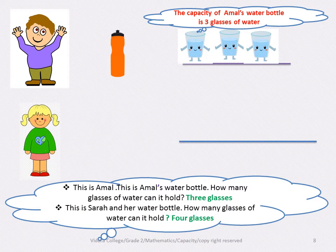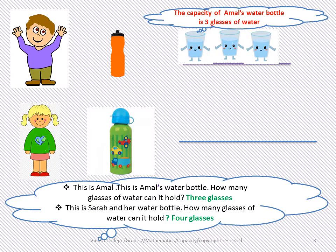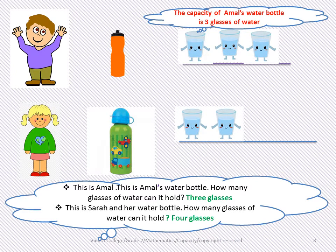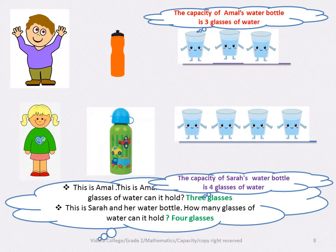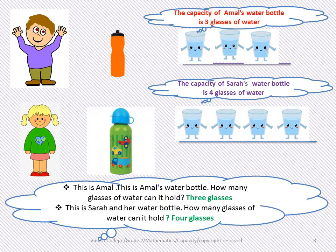This is Sarah and her water bottle. How many glasses of water can it hold? One, two, three, four. The capacity of Sarah's water bottle is four glasses of water.